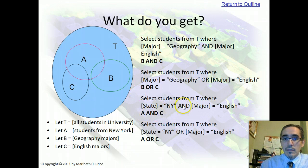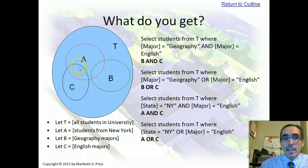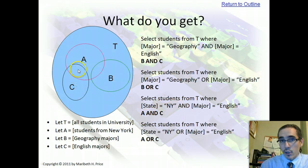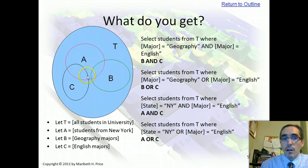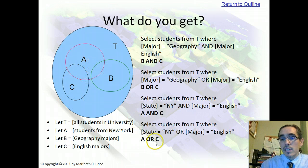A AND C refers to the intersection, the overlap between those two things. A OR C means all of both — all of A and all of C would be selected, because that satisfies the OR statement.